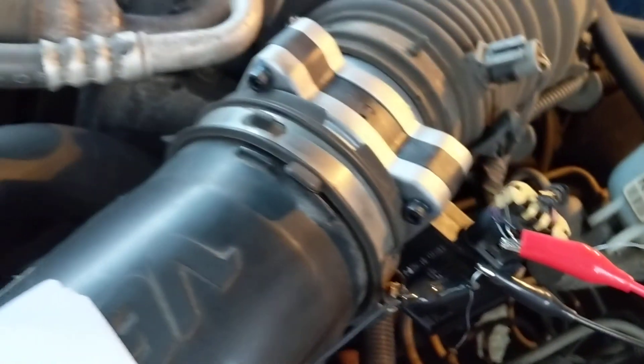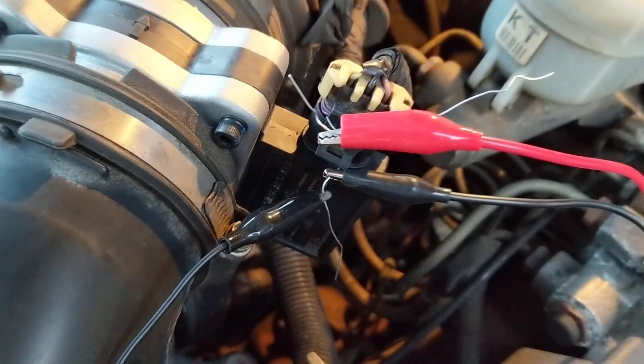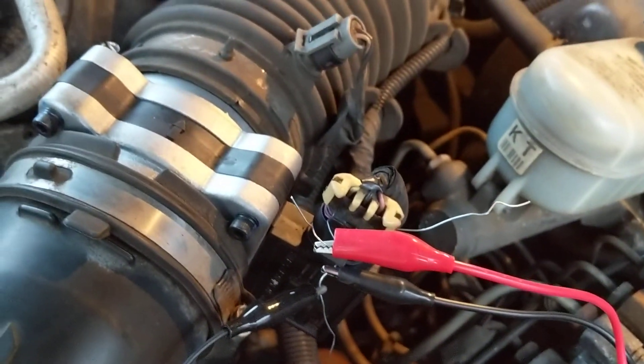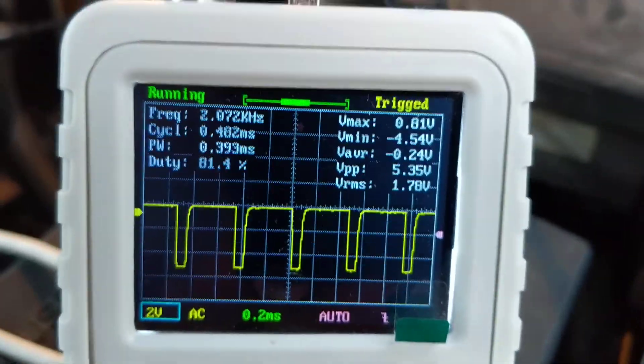This one is connected to this one. Black one is ground, as you see I have ground over here. Ground, black one, that's ground. The other one, this one going from the scope is going to the signal wire.